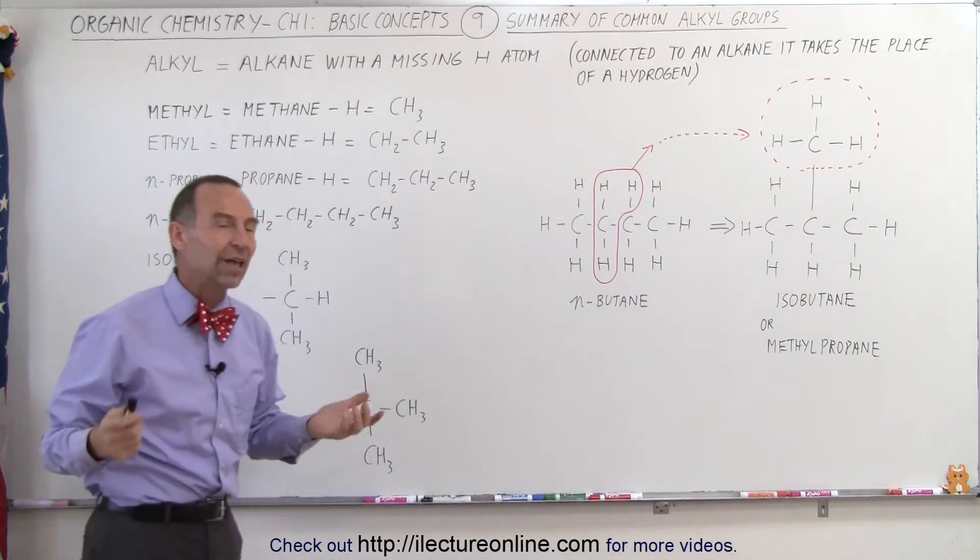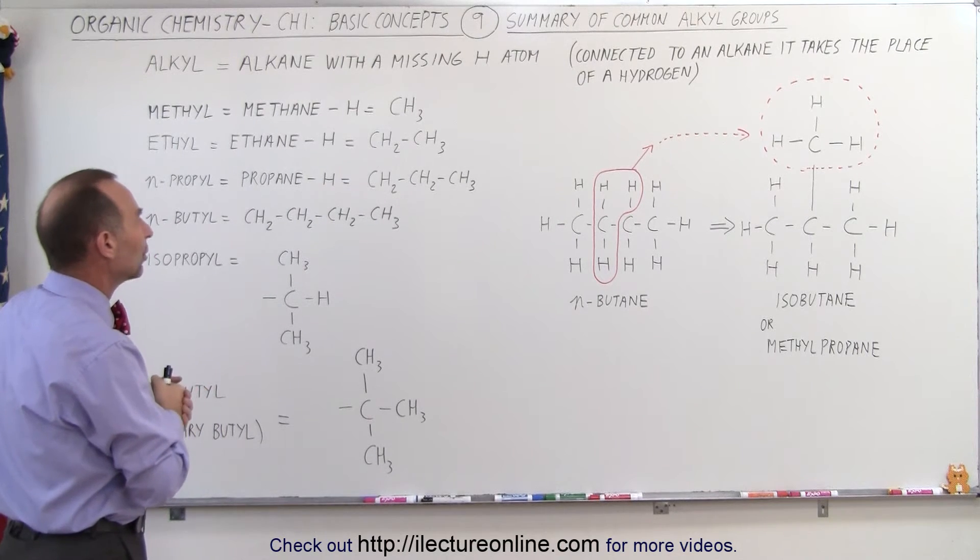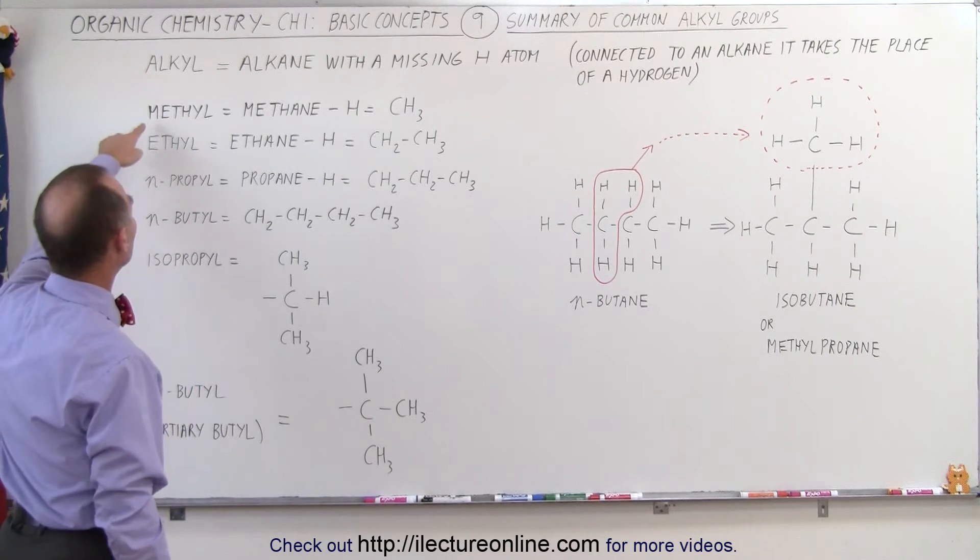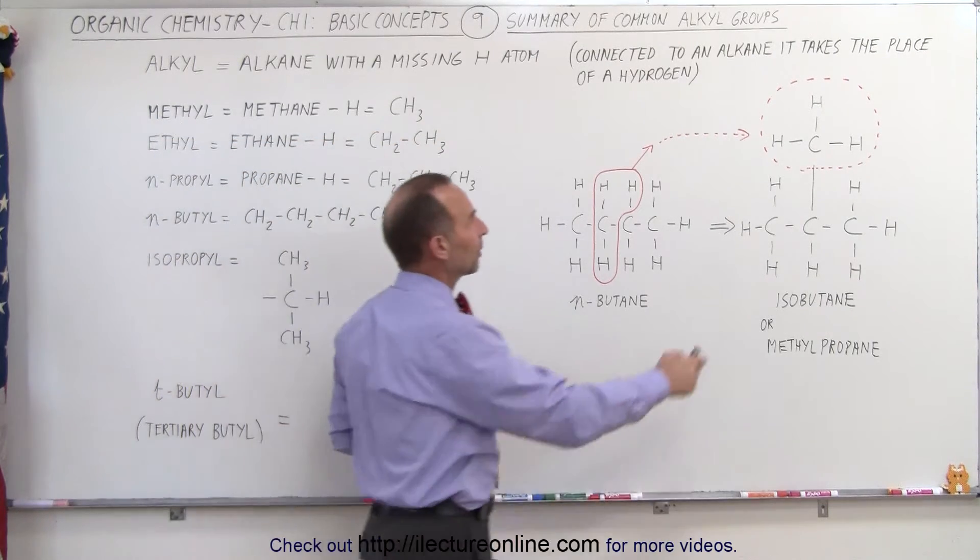So here's some examples of the type of alkyl groups that we'll run into. Some of the more simple ones, we have the methyl group, which is a single carbon and three hydrogens, like we have over here.